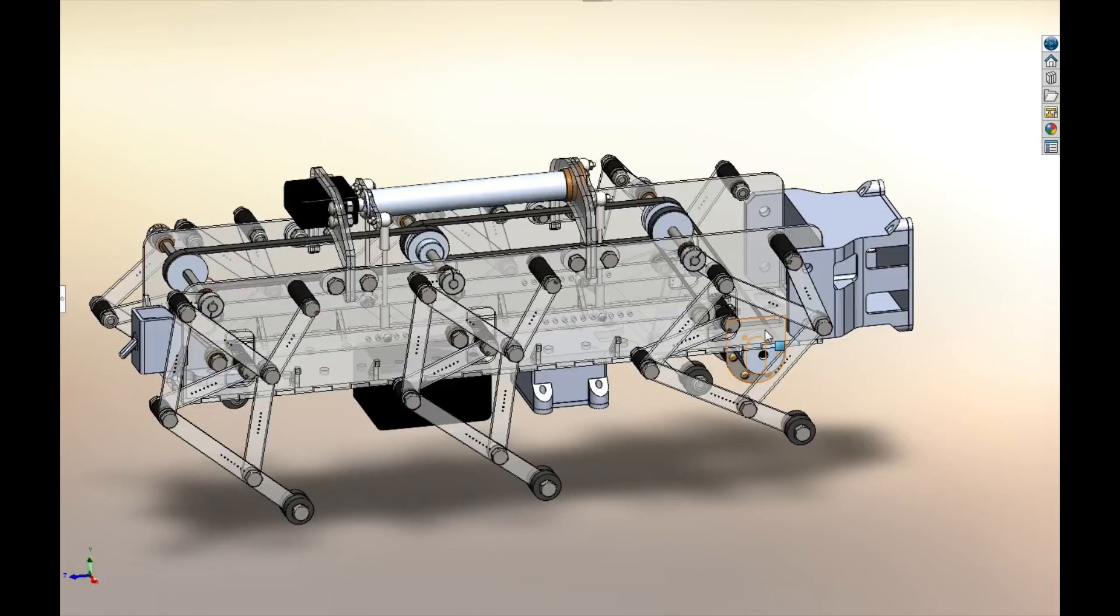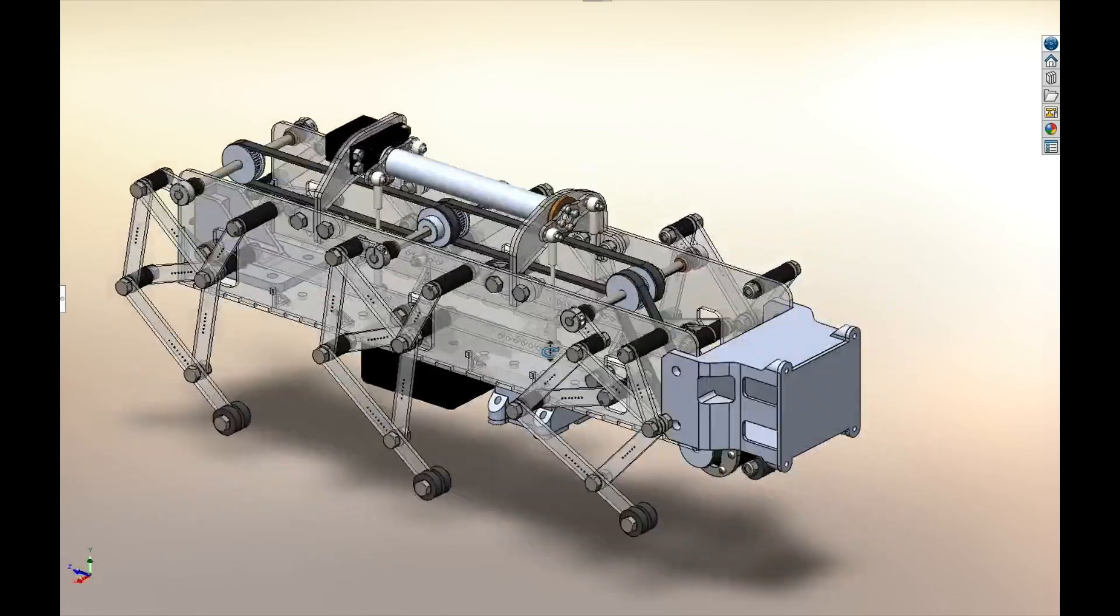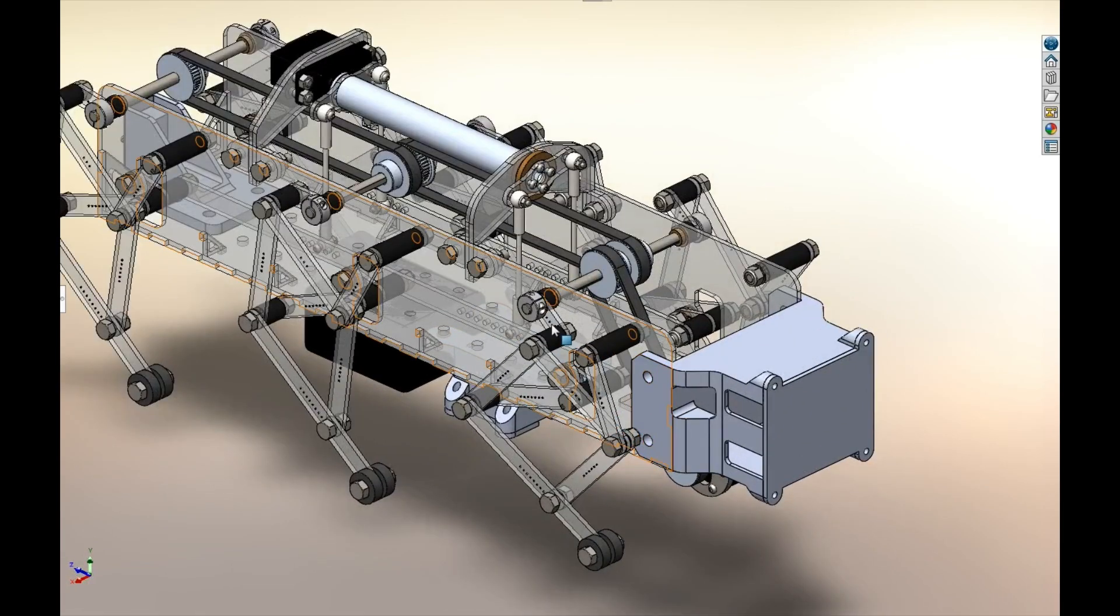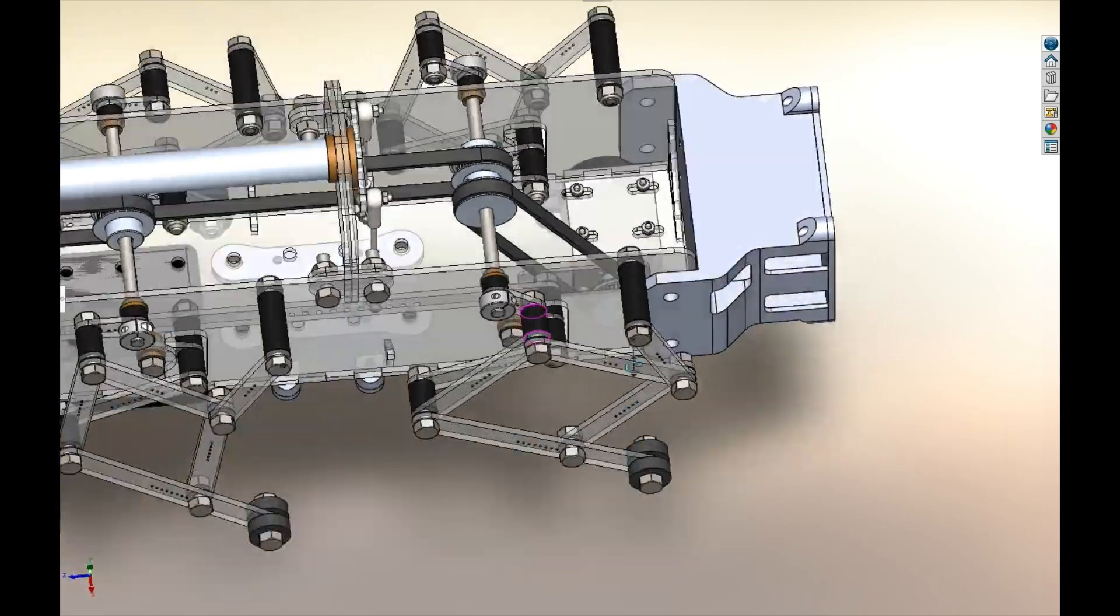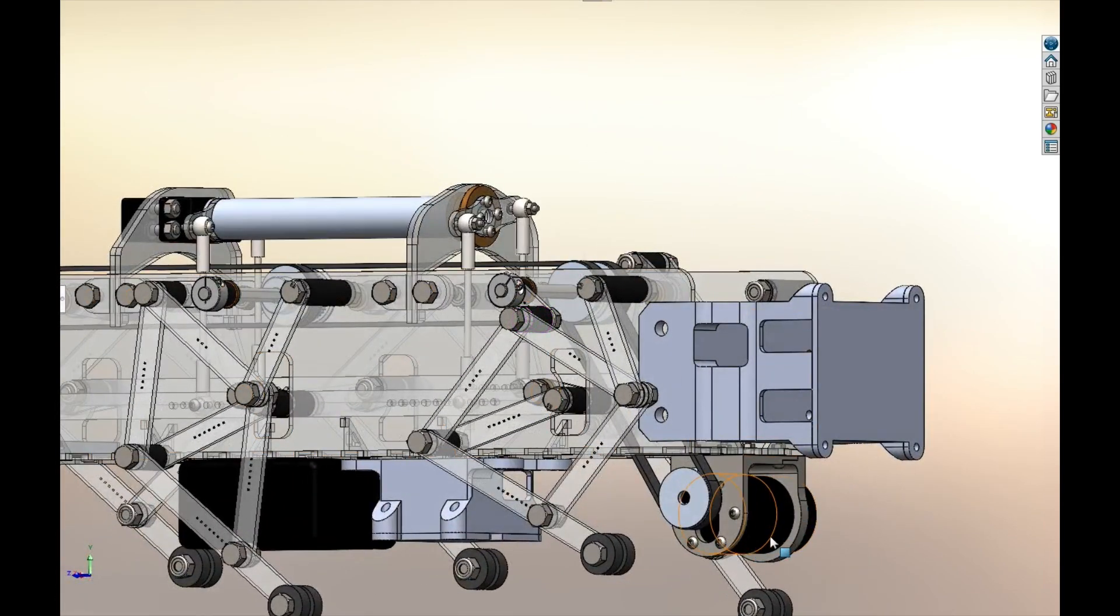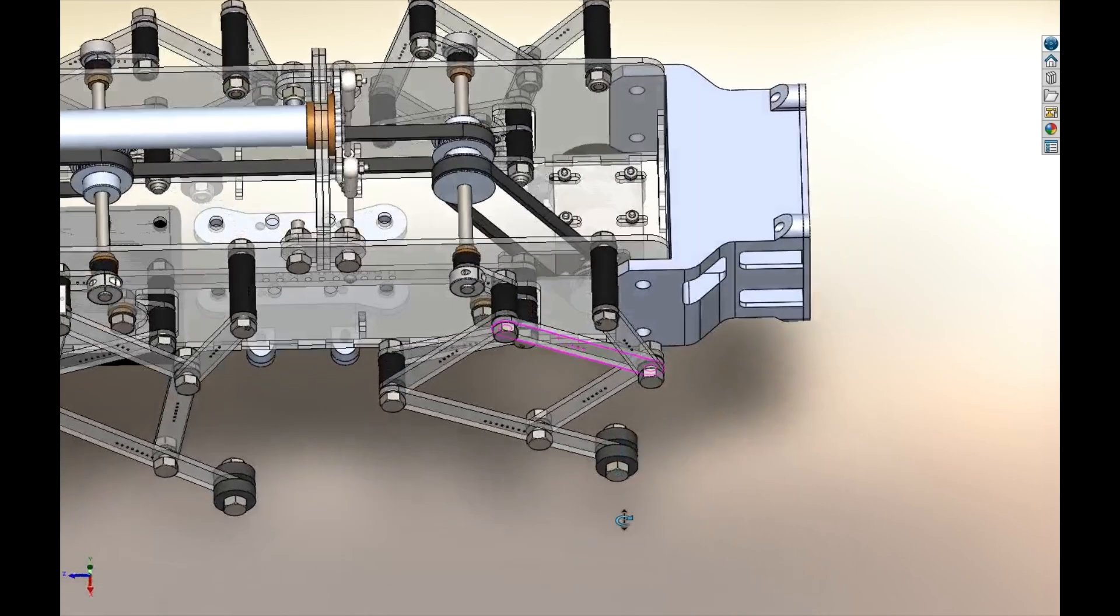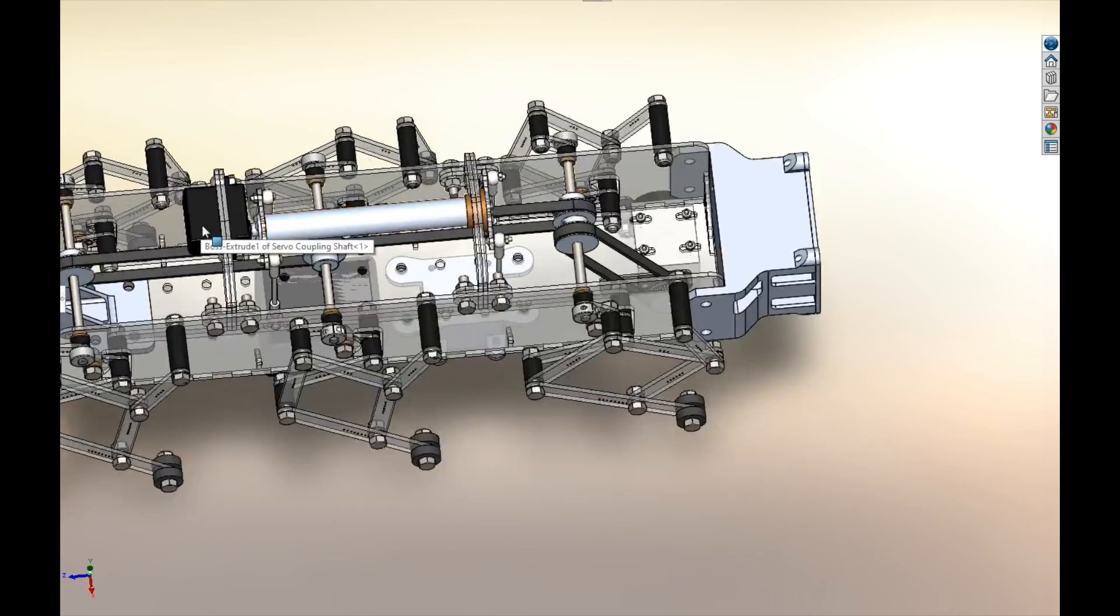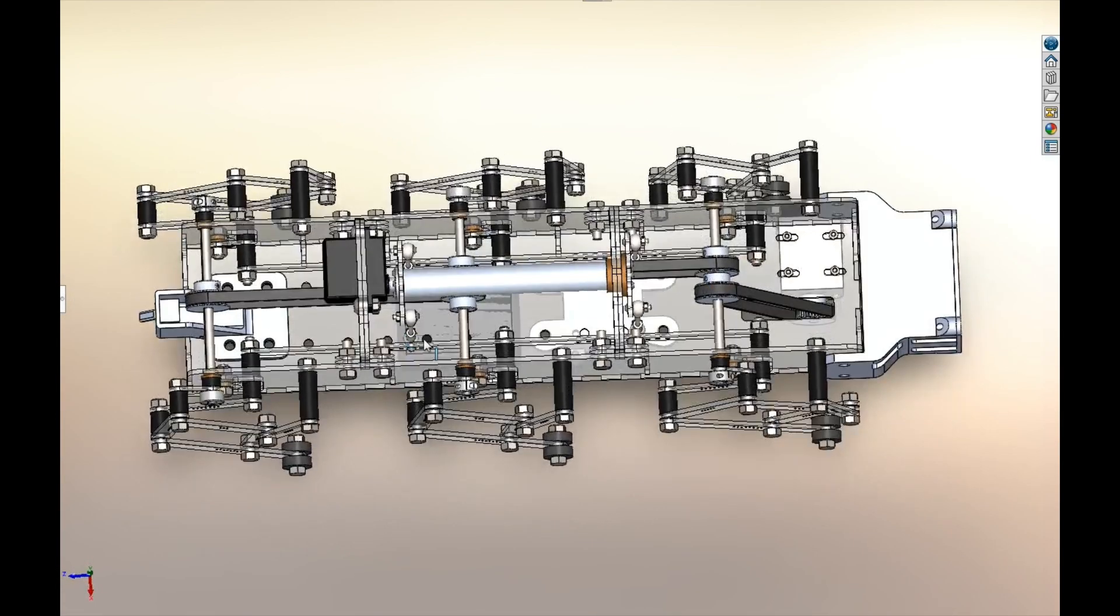My colleague Tyler did a lot of the mechanical design and modeling of this robot. A brief overview of how it works: the single main drive motor down here drives this belt, which then through two other belts drives this shaft, this shaft, and this shaft, all mechanically linked to drive in phase at the same speed.